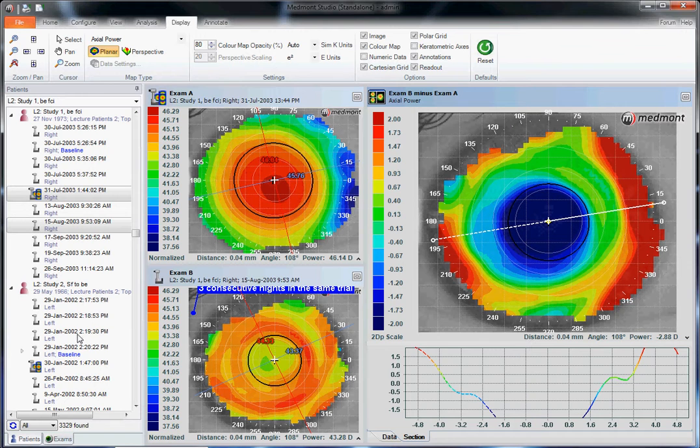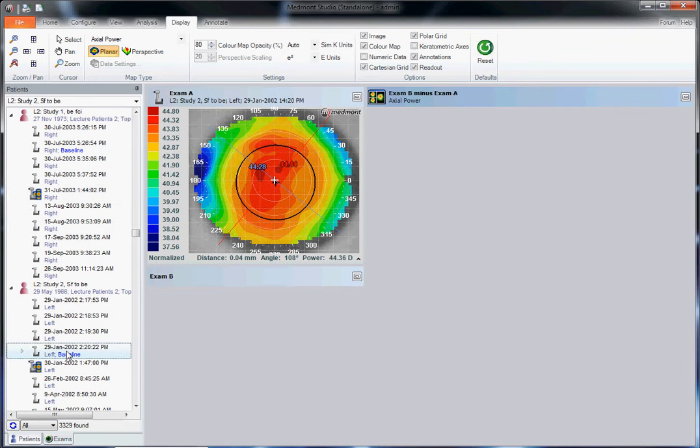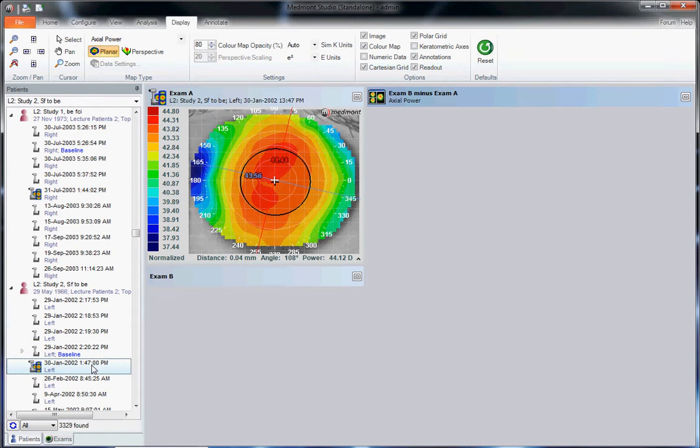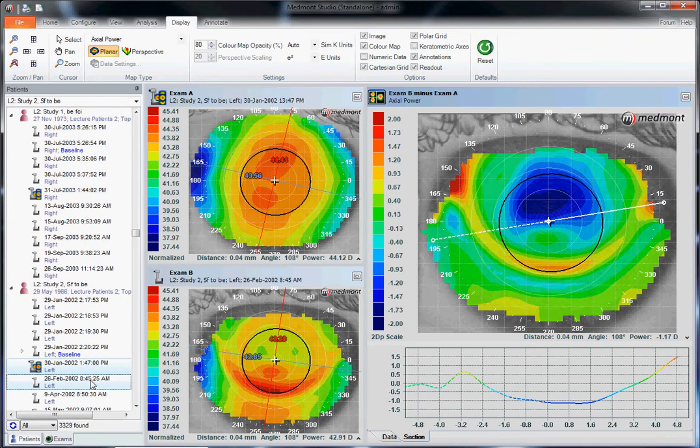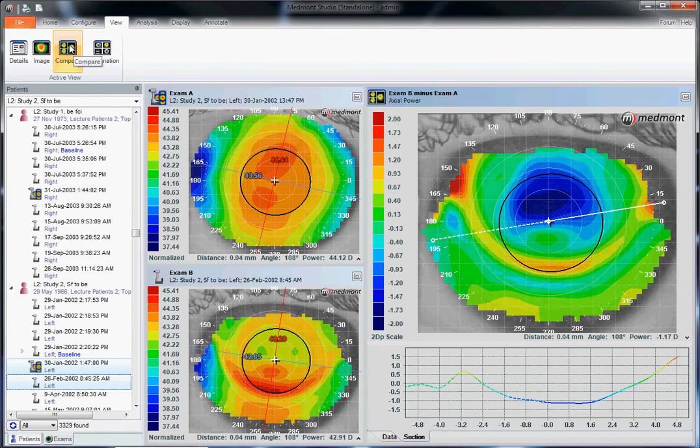If we were to choose a different case, we can choose our baseline, our best baseline map, or ideally we would do a composite to get a little more corneal coverage. Hold down the control key, select our post-treatment topography, then again go to view to select your comparison map or your subtracted map.